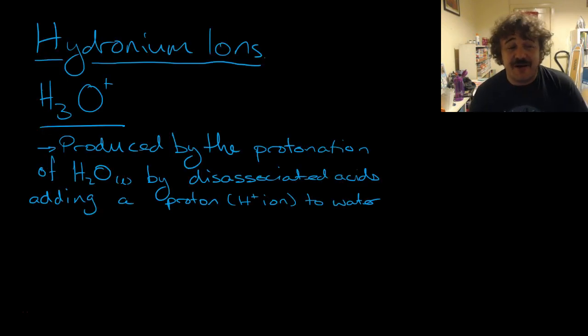Basically a hydronium ion is produced by the protonation of water. So when we have a disassociated acid, it adds a proton, which is what a hydrogen ion is, because it's got no electron, it's just a proton of its own, to water.